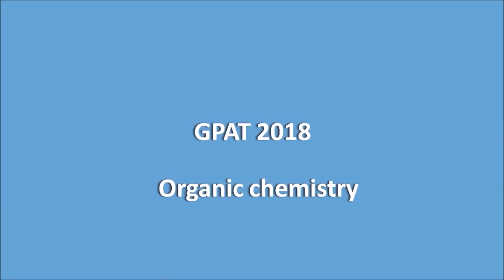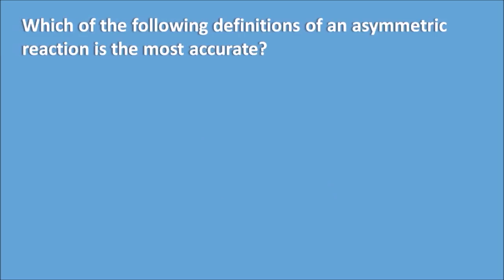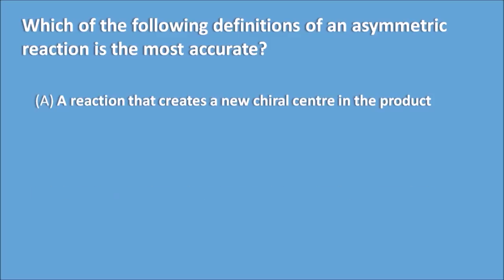In this video we will discuss GATE 2018 questions from Organic Chemistry. The first question: which of the following definitions of an asymmetric reaction is the most accurate? Option A: a reaction that creates a new chiral center in the product, so here the product is chiral.